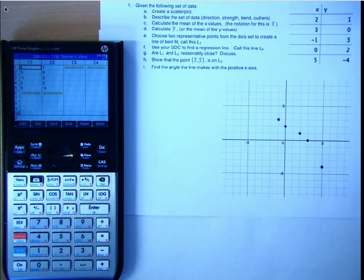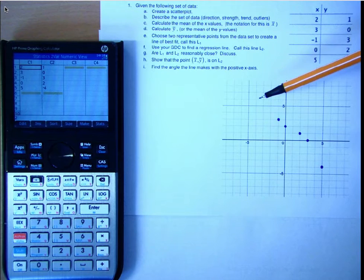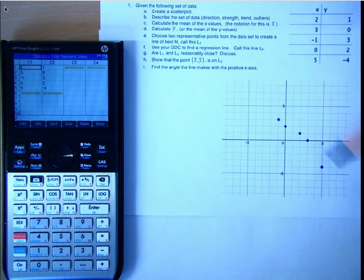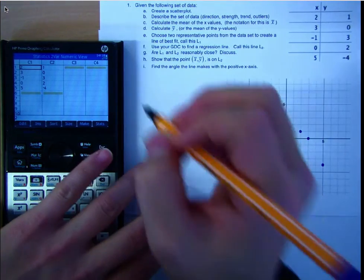So, describe the set of data. It's negative, right, because looking at it from left to right, the trend is going downwards. And the plot is pretty close together, so I would say it's moderately strong. So, strong, negative, and linear.